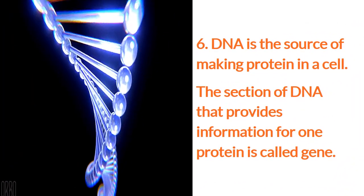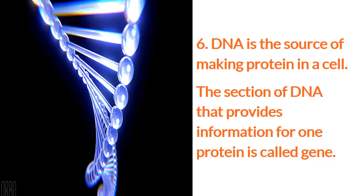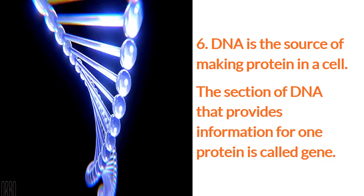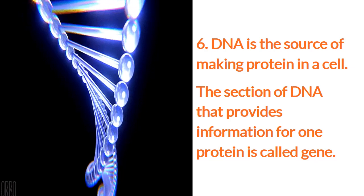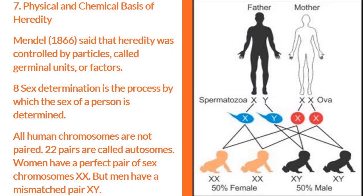DNA is the source of making protein in a cell. The section of DNA that provides information for one protein is called a gene. Regarding the physical and chemical basis of heredity, Mendel in 1866 said that heredity was controlled by particles called germinal units or factors.